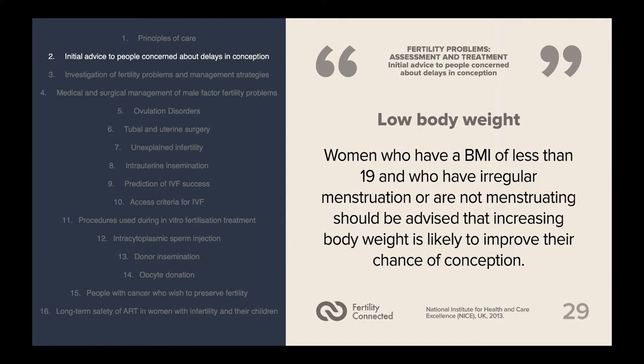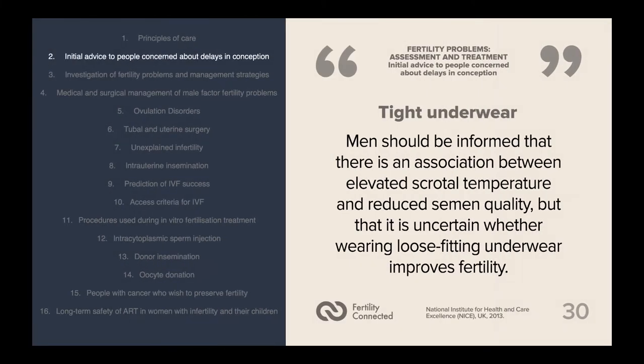On the opposite end of the spectrum, women who have a BMI of less than 19 and who have irregular menstruation or are not menstruating should be advised that increasing body weight is likely to improve their chance of conception. Men should be informed that there is an association between elevated scrotal temperature and reduced semen quality, but that it is uncertain whether wearing loose-fitting underwear improves fertility.